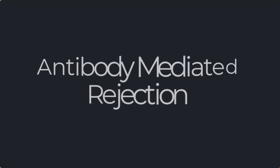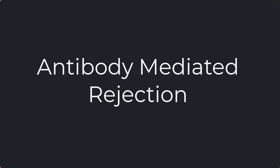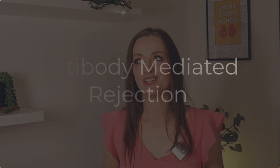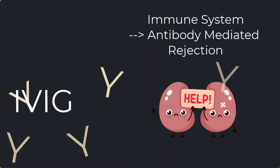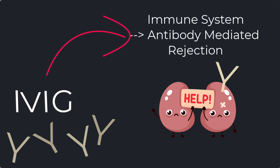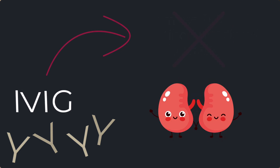Another reason you might see IVIG in your transplant patient is antibody-mediated rejection. It may not be intuitive that you're giving antibodies to somebody with antibody-mediated rejection, and to be honest, we don't really know exactly how it works. But the theory is that by giving the body a lot of antibodies, it creates a negative feedback cycle to the immune system — essentially signaling that there are already plenty of antibodies, so it doesn't need to make any more, kind of switching off that antibody production.